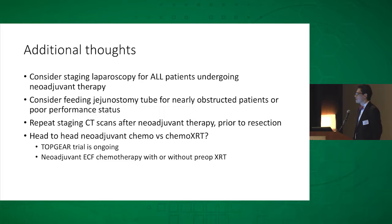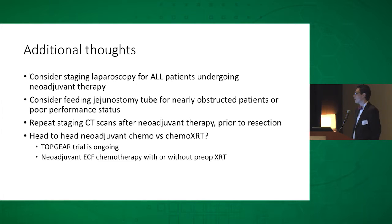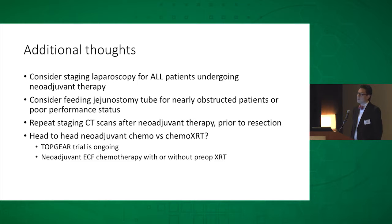Staging laparoscopy also gives you the opportunity to place the chemotherapy port, and to consider placing a feeding J-tube if the patient comes in particularly frail. Then you want to repeat CT scans after neoadjuvant therapy is complete to make sure you've achieved what you set out to do. Finally, stay tuned in the next couple of years for additional results from a randomized trial currently enrolling in Australia and New Zealand, which is head-to-head comparing perioperative chemotherapy alone to perioperative chemoradiotherapy — this trial will finally put some of that continual debate to rest.